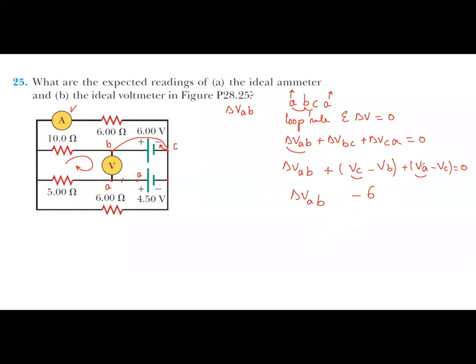VAC, from this point to this point. VA is at the positive side, so we have plus the voltage here equals to 4.5, equals to zero.